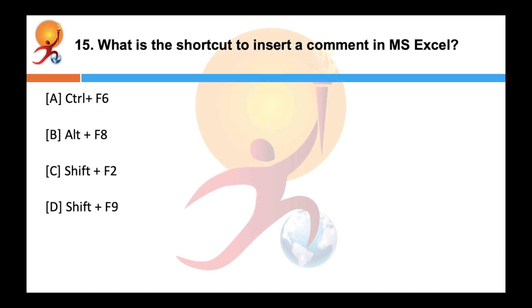What is the shortcut to insert a comment in MS Excel? Correct answer is C. Shift plus F2. Shift plus F2 inserts a comment in MS Excel. When a cell is active, pressing Shift plus F2 button will allow entering comment in that cell.